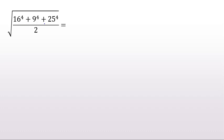Square root of 16 to the 4 plus 9 to the 4 plus 25 to the 4 over 2 is what? Let's focus first on the numerator inside the square root, which is 16 to the 4 plus 9 to the 4 plus 25 to the 4.